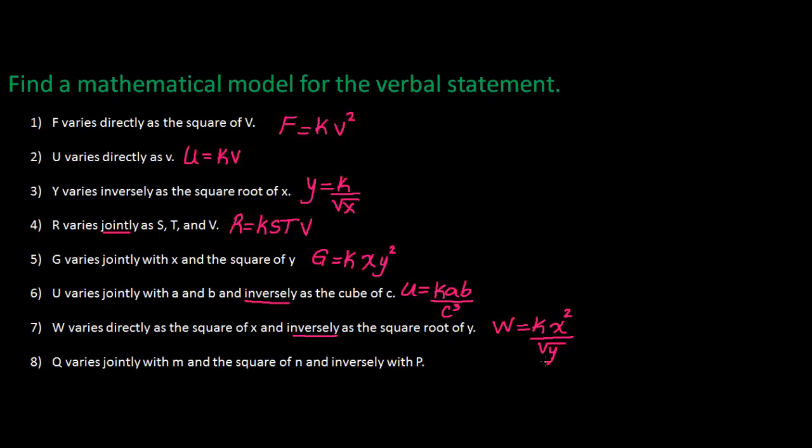And the last one here is Q varies jointly, so Q varies jointly with M and the square of N, so M N squared.